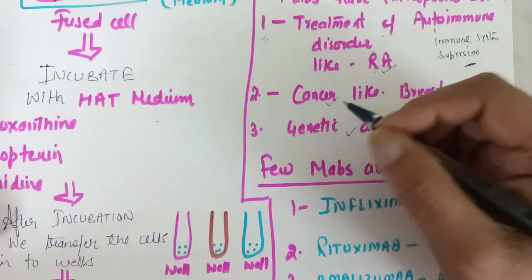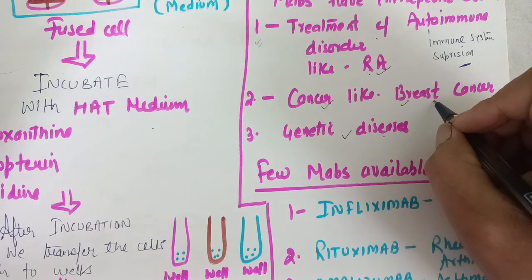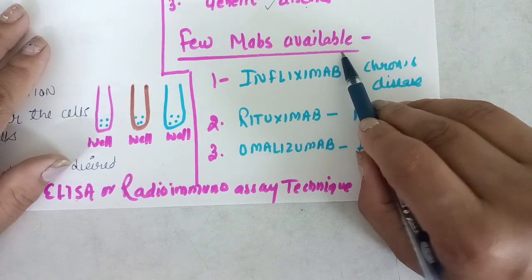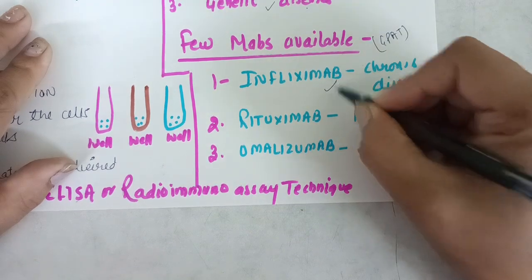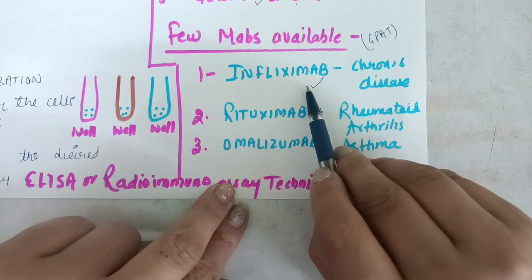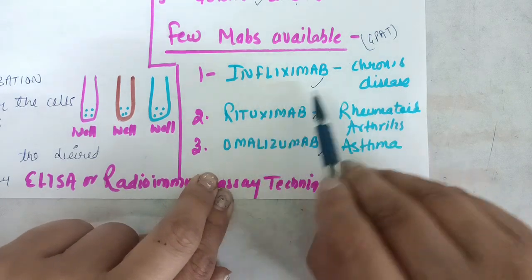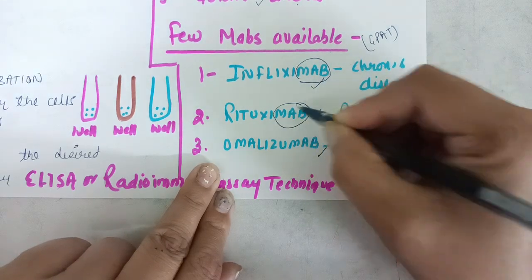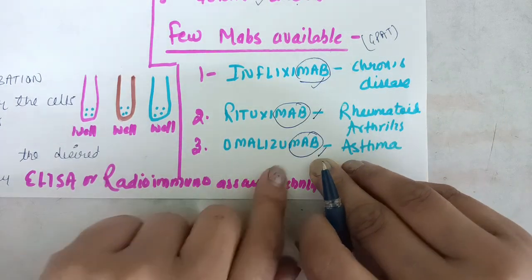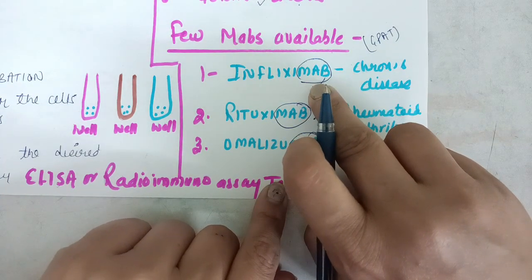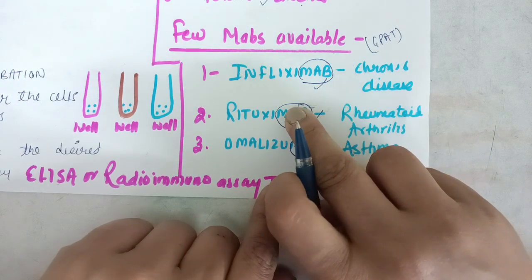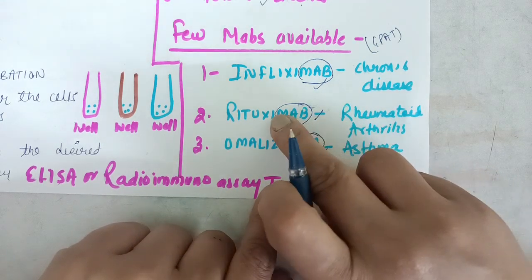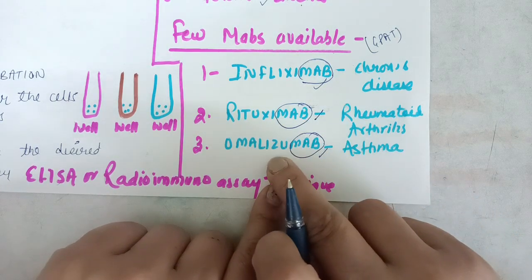Now let's talk about how to make a monoclonal antibody — through hybridoma technology. For this technique you need two things: one is your activated B cell, and the other is a myeloma cell. You can take the activated B cell from mice. We take the activated B cell because it can produce antibodies. However, the activated B cell has a limited lifespan — it will not be able to live long. So we need to take a cell which is immortal, which is the myeloma cell.